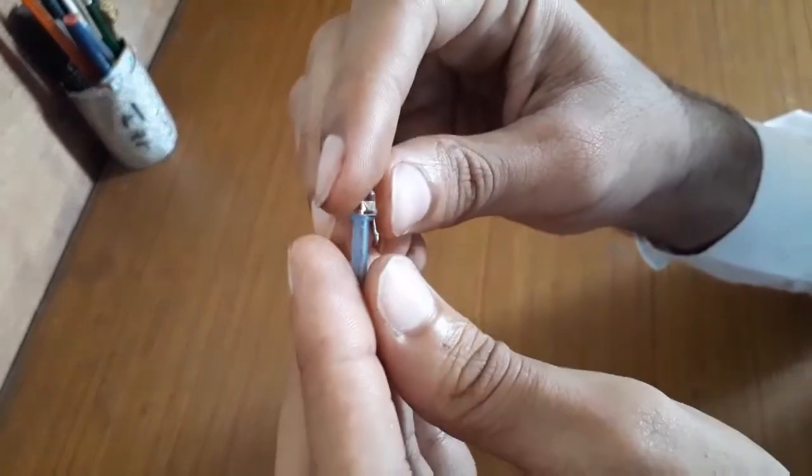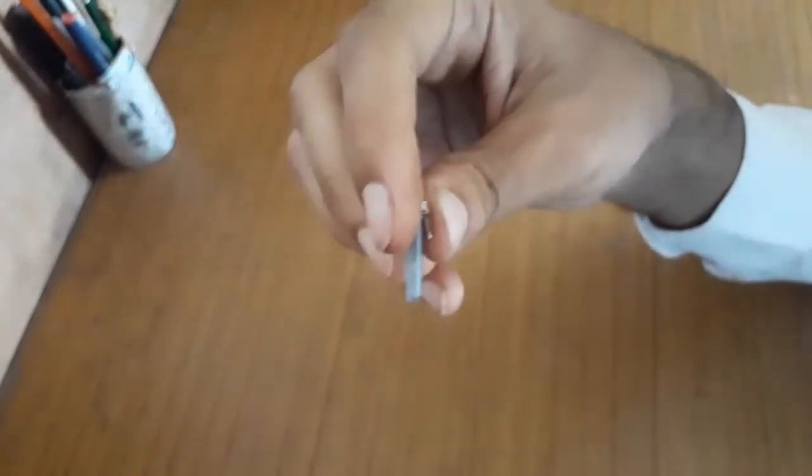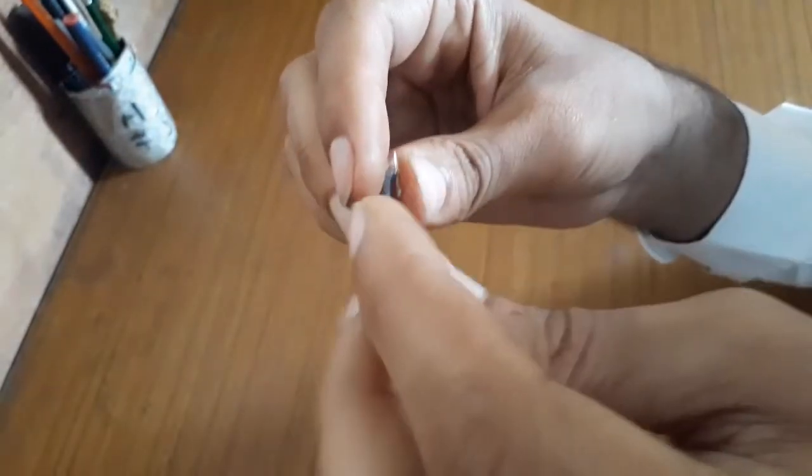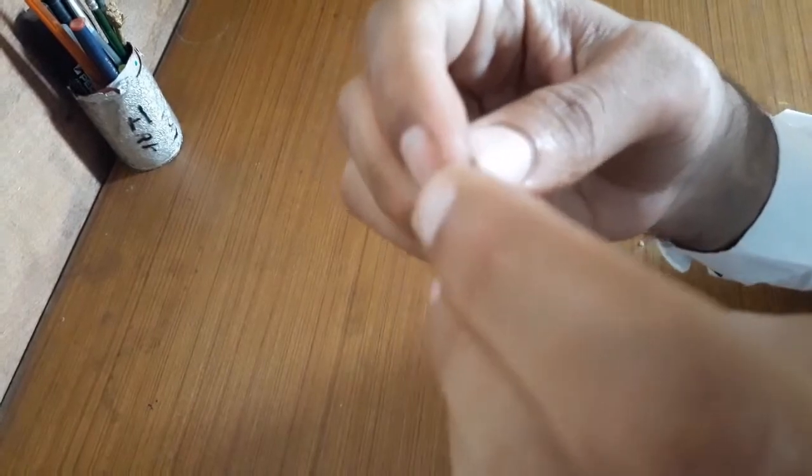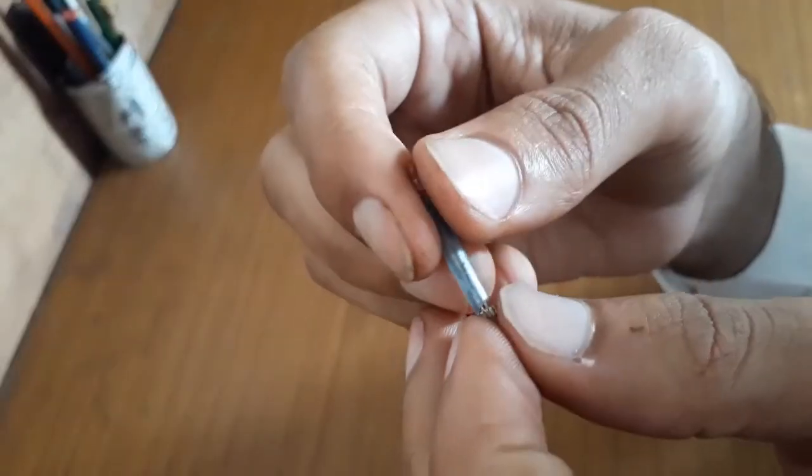First of all, put the positive terminal of this LED to this pipe and now this nail. It will be the probe of this tester. Here it's done.